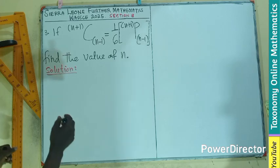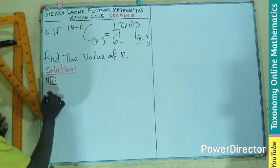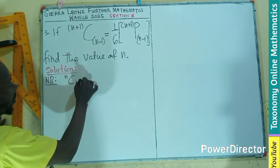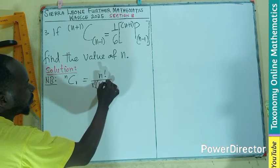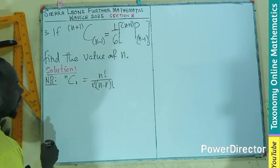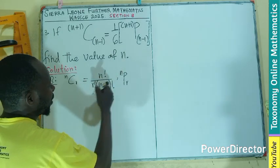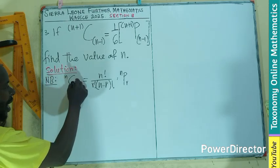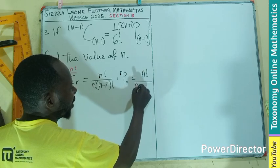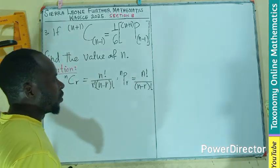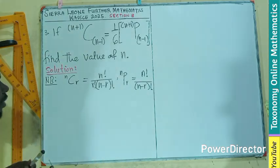Let's get started. Remember, we need to note that if I have n combination r, it is n factorial over r factorial times n minus r factorial. And n permutation r is n factorial over n minus r factorial. So this is the combination and permutation formula that we are going to make use of.